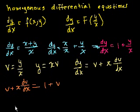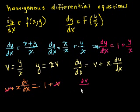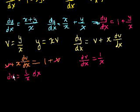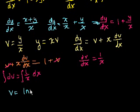Now this is straightforward. We subtract v from both sides, giving us x·dv/dx equals 1. Dividing both sides by x, we get dv/dx equals 1/x. Multiplying both sides by dx gives dv equals (1/x)dx. Taking the antiderivative of both sides, we get v equals the natural log of the absolute value of x plus c.